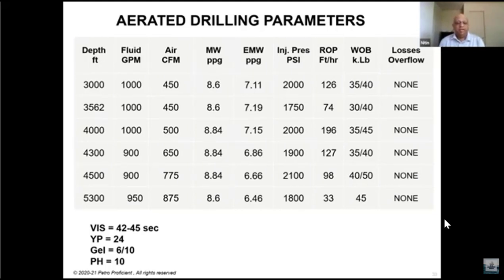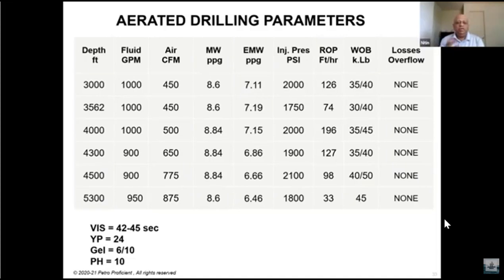Instead of experiencing loss circulation and finding remedial solutions — like setting cement plugs limited to 250-300 feet, drilling through, and experiencing losses again in a time-wasting cycle — if you use this technique you may not experience loss circulation at all. You may drill through that zone, run casing, cement it, and continue drilling the reservoir. So the section is completed without those complications.